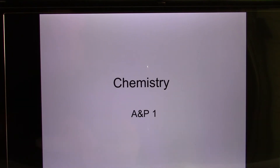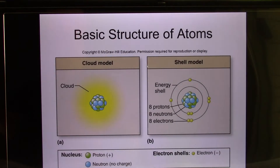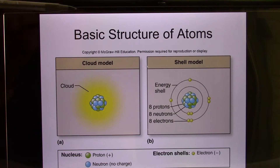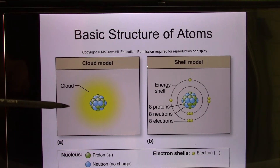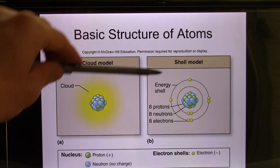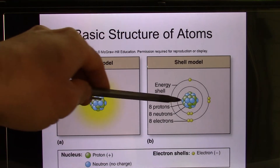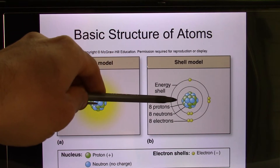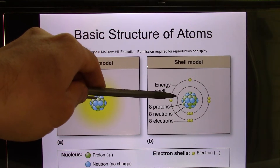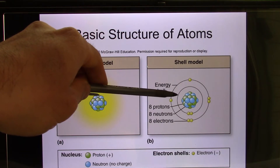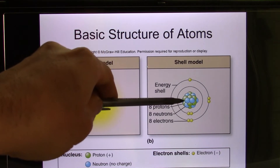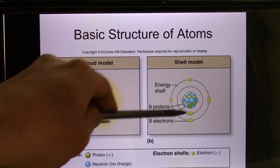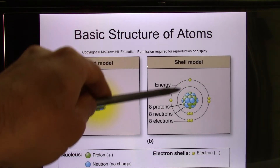Brain chemistry. The basic structure is the atom. This is a model called the cloud model in chemistry, and we look at the shell model. The inside is called the nucleus. In the nucleus you have the subatomic particles: proton and neutron. Protons have positive charge and neutrons have no charge. Together these two stay in the nucleus, and electrons have negative charge and they stay outside.